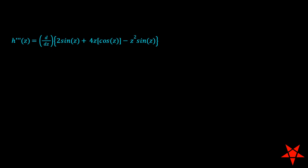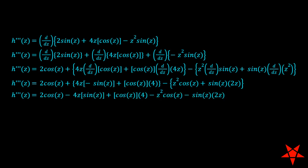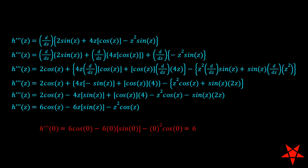Moving on to h triple prime, we juggle upwards of 5 terms this time. While religiously keeping track of our pluses and minuses, we begin to see signs of a non-zero third derivative at our singular point. Evaluating h triple prime at z equals 0 gives us 6, and we can safely say that f of z has a third order pole at z equals 0.